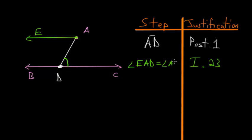From here, using Postulate 2, we can extend line EA in any direction. Let's do that and label this point F, so we just created line EF.